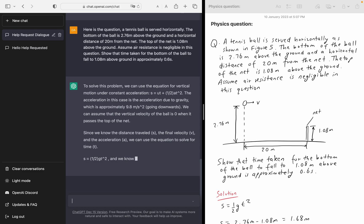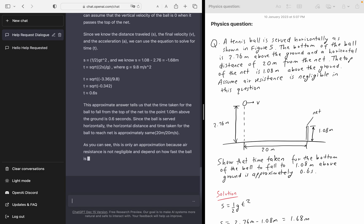We can assume that the vertical velocity of the ball is 0 when it passes the top of the net. Since we know the distance traveled, the final velocity, and the acceleration, we can use the equation to solve for T. Now it's just running. So it's given S is equal to half GT squared, and we know that S is equivalent to 1.08 minus 2.76, which is equivalent to minus 1.68 meters.